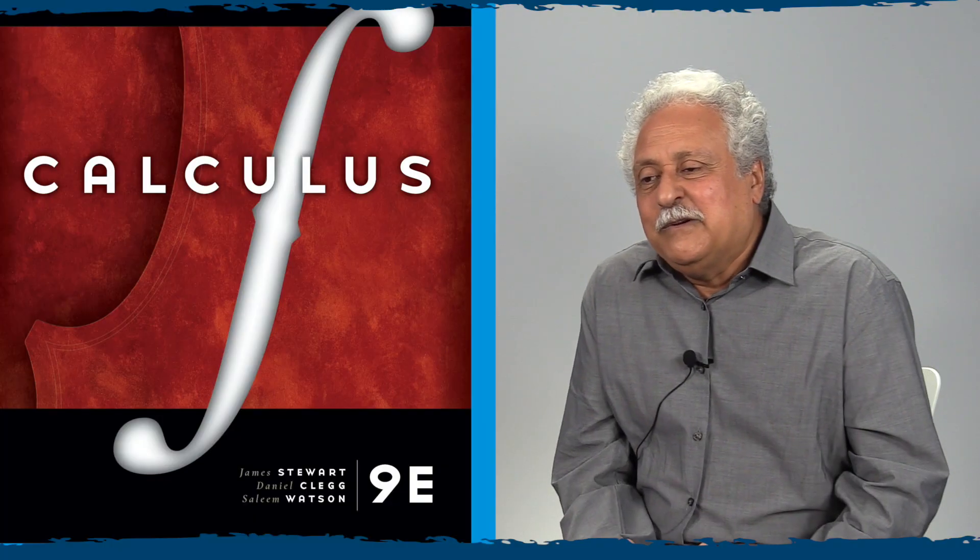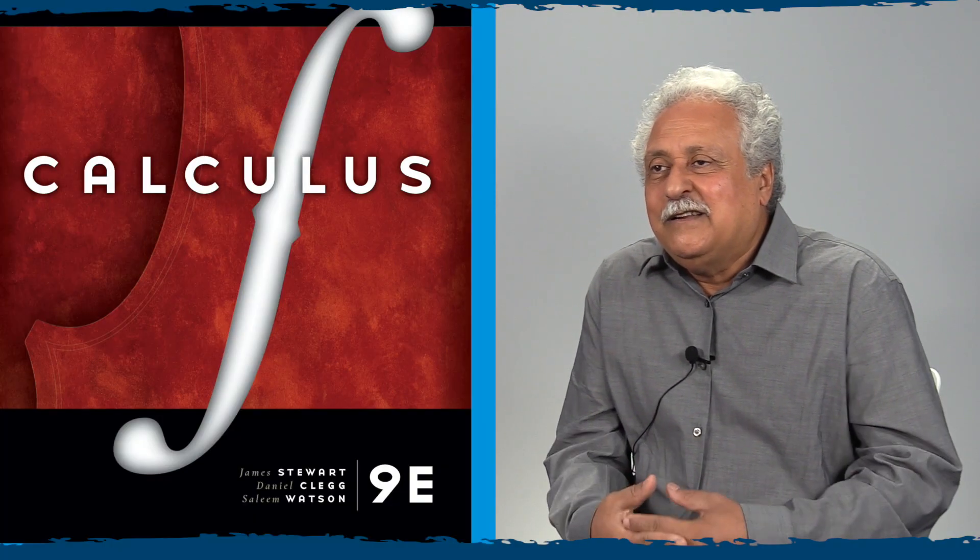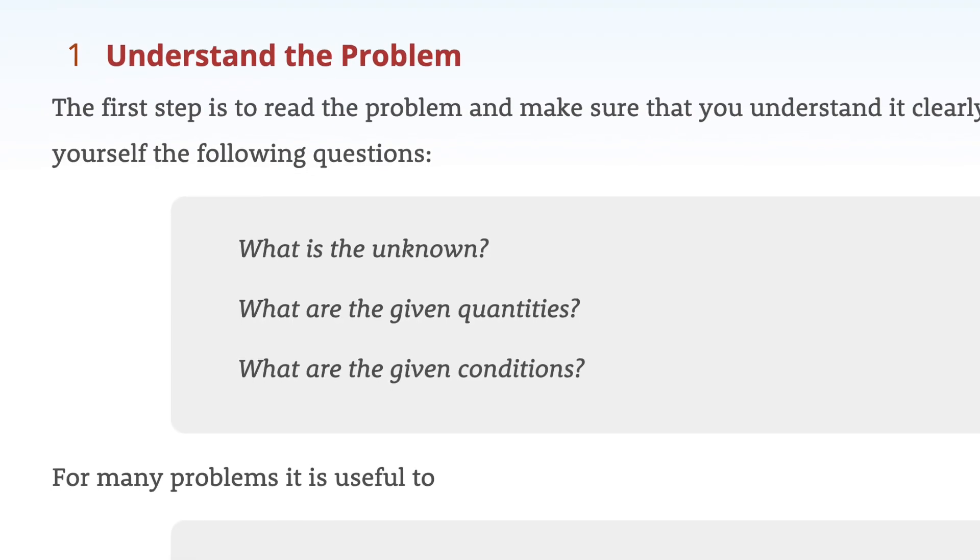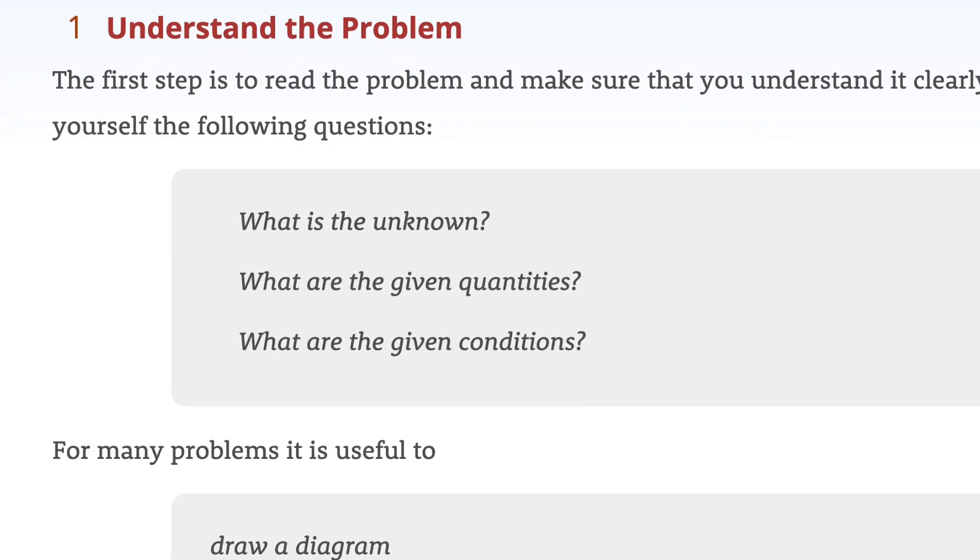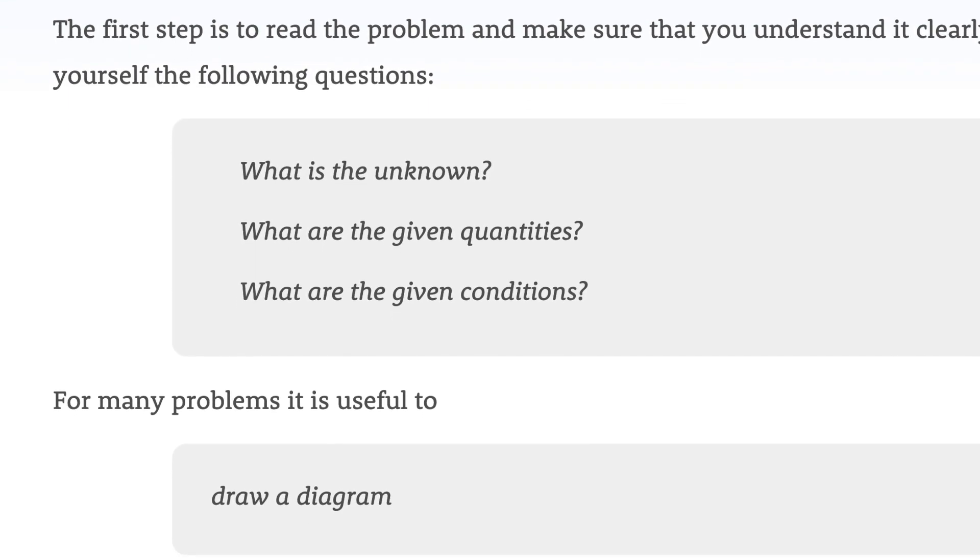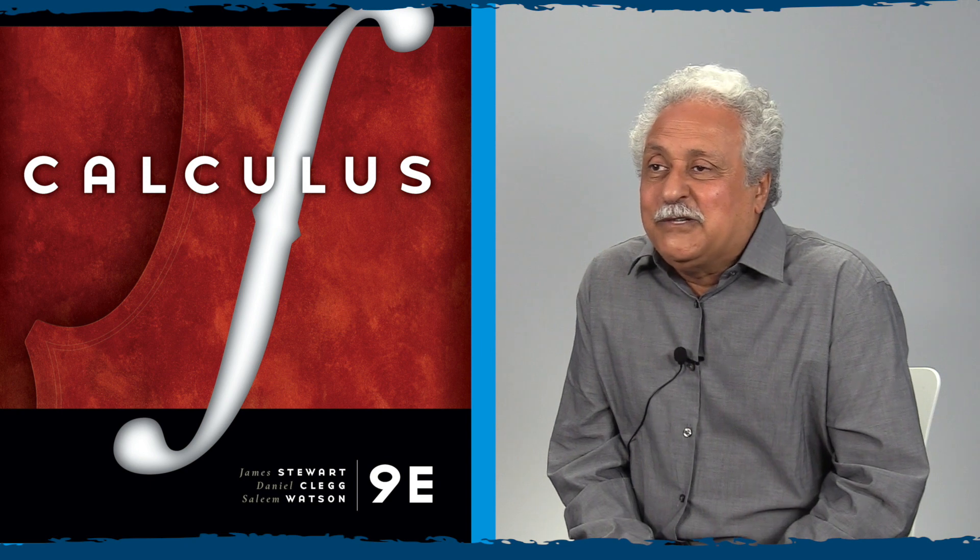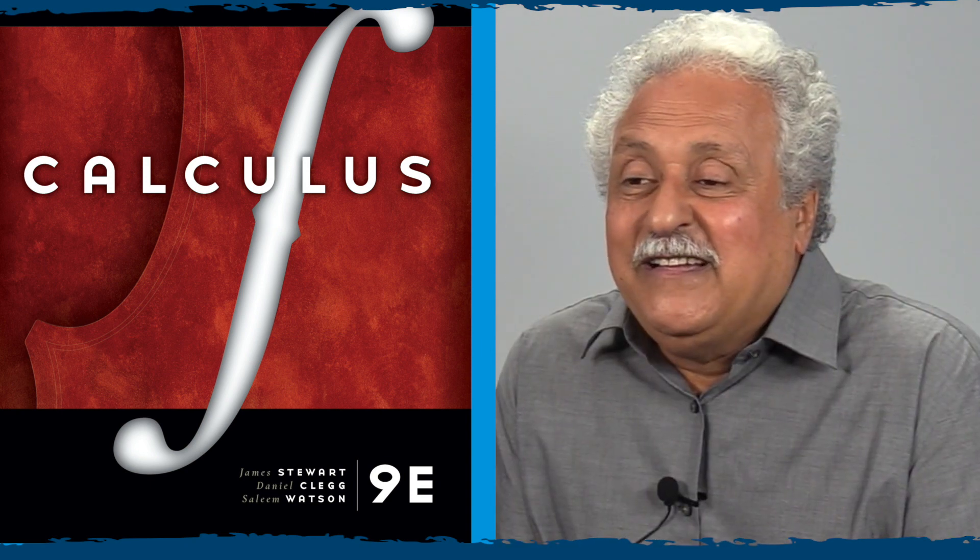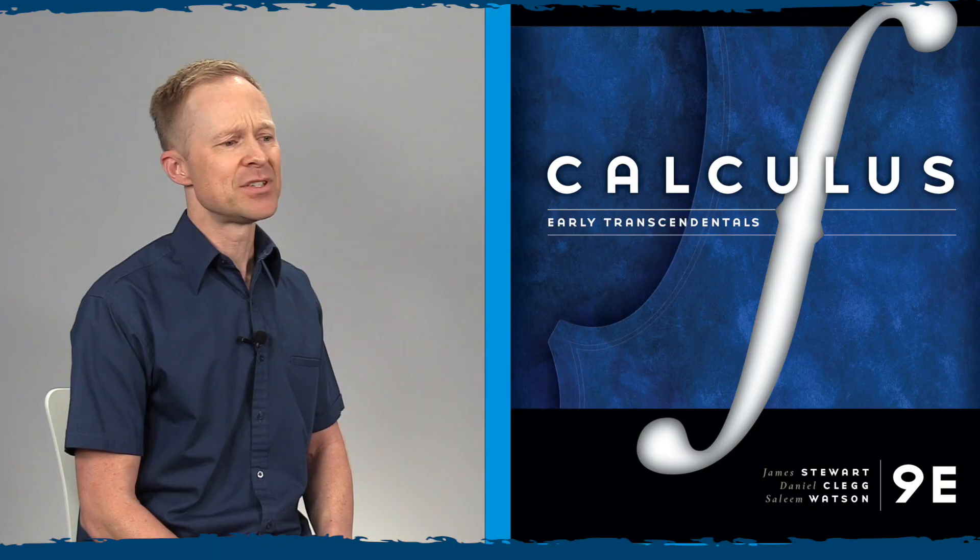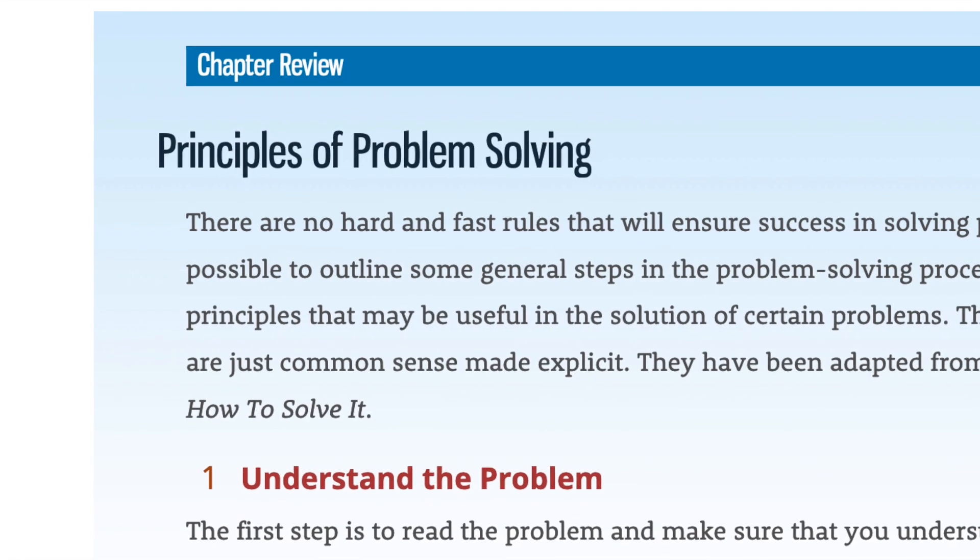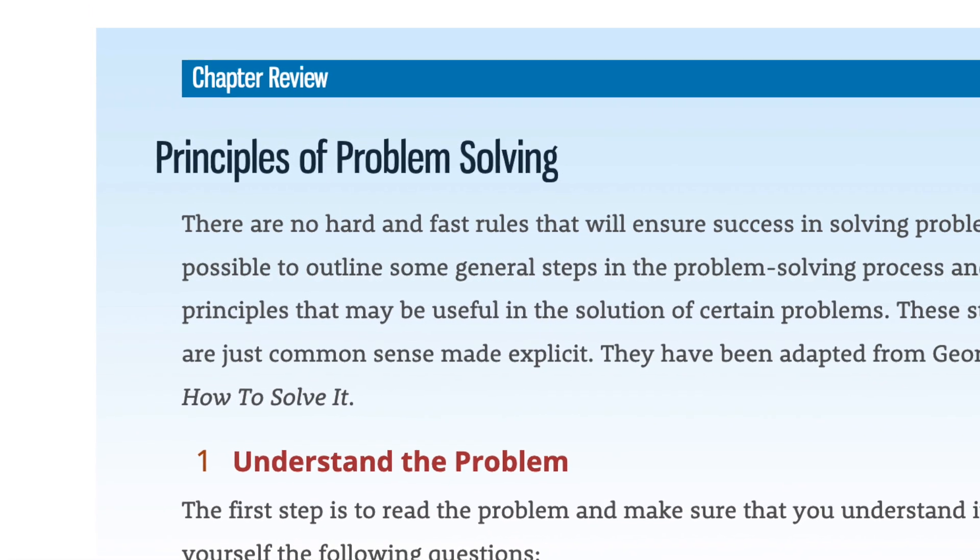The problem-solving approach of the text is really an important part because Professor Stuart believed that problem solving is not just something that's innate in a person, but it's something that can be learned. He took a course from George Polya, the famous problem solver. I believe he had a big impact on Jim. So one of the things he did in the very first chapter, at the end of the first chapter, is he has a summary of Polya's principles and he calls it principles of problem solving.